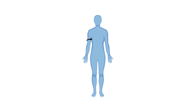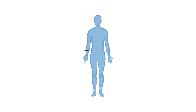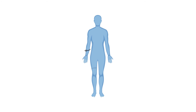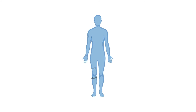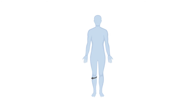Now let's look at lateral and medial rotation in the upper limb. In the anatomical position, the thumb is on the lateral side of the body. When the straight arm turns in so that the thumb rotates to the medial side, that is medial rotation at the shoulder joint. When it returns to the anatomical position and rotates out, that's called lateral rotation. The same applies to the straight lower limb — when the foot rotates in towards the midline that's medial rotation at the hip joint, and when it rotates out that's lateral rotation. Physicians often use the terms internal and external rotation to describe these movements.